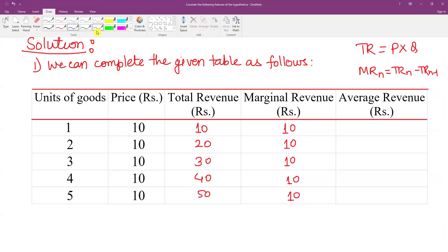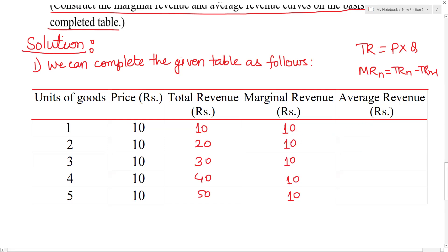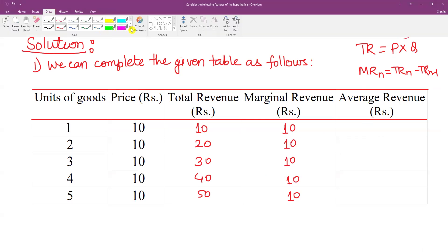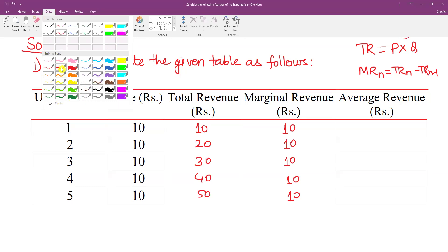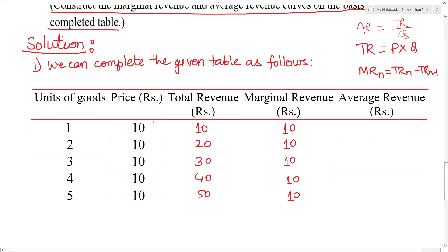Now I will calculate the average revenue value. Average revenue equals total revenue divided by quantity. So: 10 divided by 1 is 10, 20 divided by 2 is 10. The average revenue value is 10, 10, 10, 10, 10. The table is now complete.